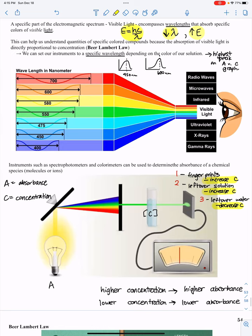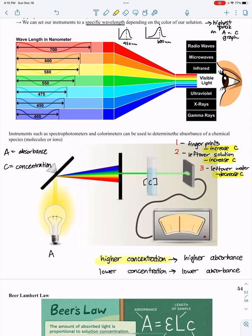This helps us understand quantities of specific colored compounds because the absorption of visible light is directly proportional to concentration. The amount of light a substance absorbs is directly proportional to concentration. If I have a higher concentration, I'll have higher absorbance. Lower concentration means lower absorbance of visible light.